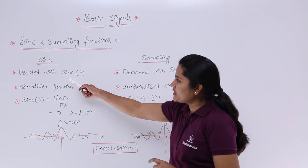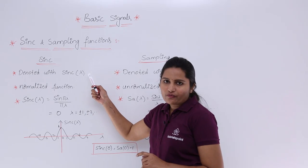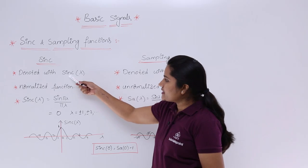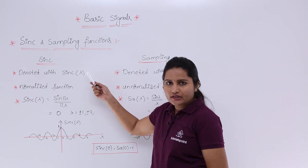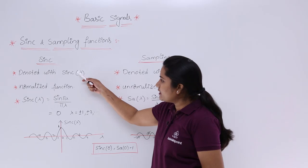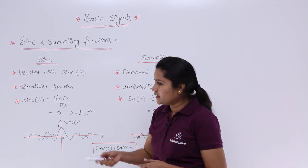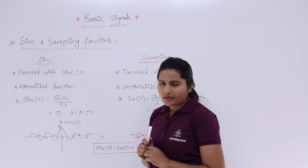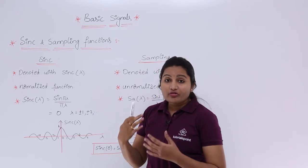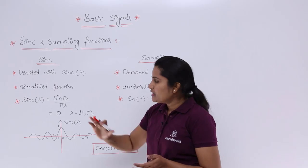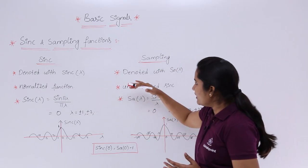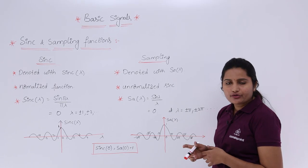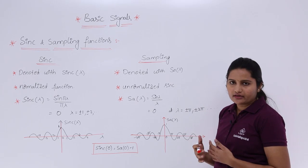Sinc function is denoted as sinc of lambda — in some textbooks or articles you can see sinc of x, sinc of t, or any independent variable. Here I am indicating it as sinc of lambda. This is a normalized function — that is a very important point. The sampling function is denoted as sa of lambda; you can also write sa of t, sa of x, or any variable.